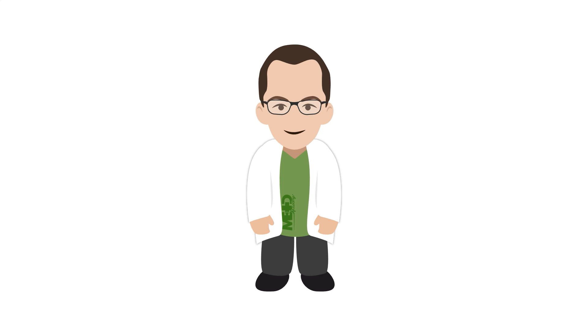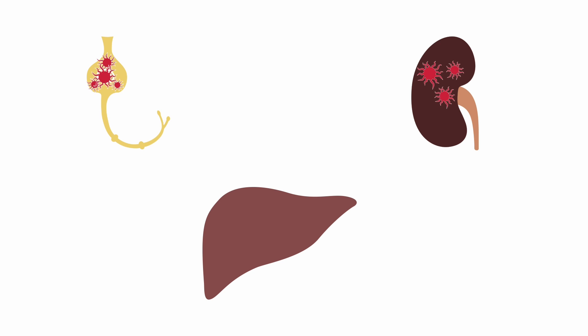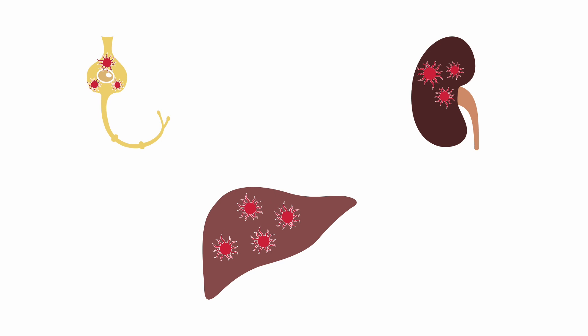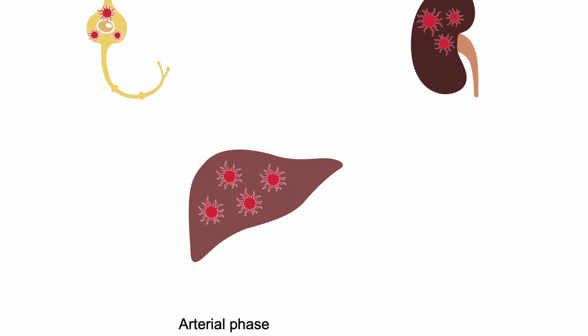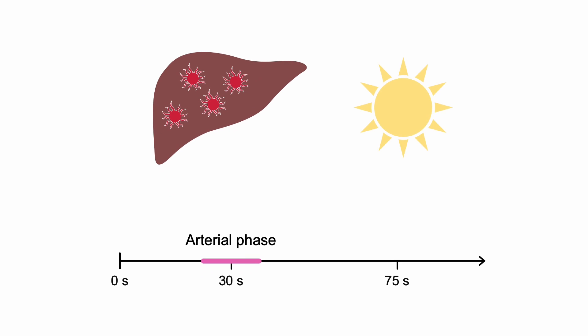Now let's switch gears to discuss the multiphasic cancer examination used for both neuroendocrine tumors and renal cell carcinomas. Both neuroendocrine tumors and renal cell carcinomas are known to produce hypervascular metastases, most commonly in the liver. These liver metastases appear bright on the late arterial phase images, but can frequently blend in on the portal venous phase images. Because of this characteristic, you can use multiphasic CT for staging these cancers.